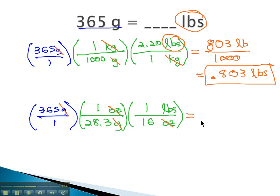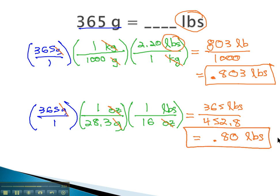When we multiply straight across in this case, we get 365 pounds over 28.3 times 16 is 452.8. And when we divide there, we get .80 pounds. So again, it's approximately, oh, it's .81, I think, when we round. .81 pounds.